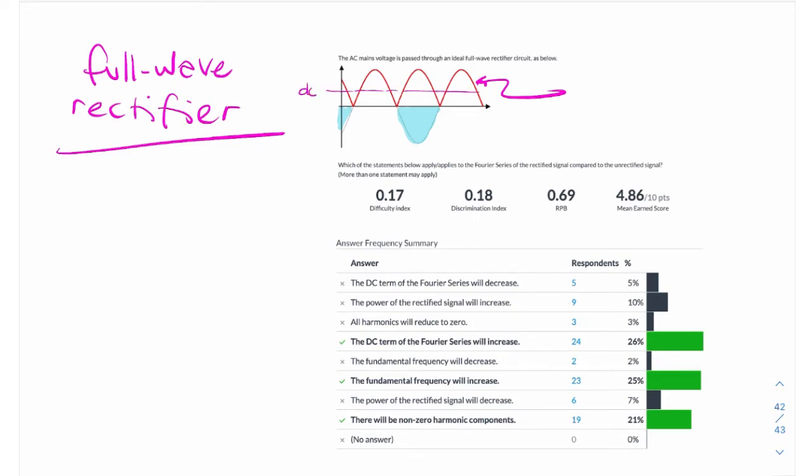So the first option, the DC term will decrease. Well, it won't decrease. It was zero, and it becomes something positive. So that's clearly wrong, because it'll actually increase.